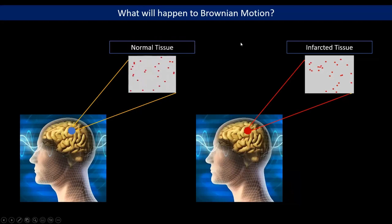So what happens to the Brownian motion? There won't be any Brownian motion in infarcted tissues. Brownian motion will stop. As we can see that this is a normal tissue. And this one is with infarction. So how can we detect this information in diffusion-weighted imaging? Let's see that.